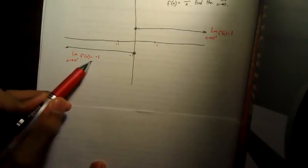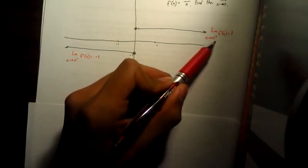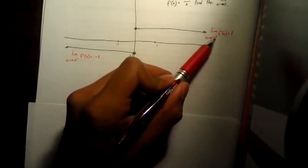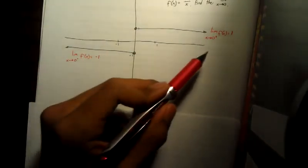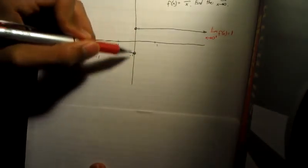When you come from the left, that's also known as the left-hand limit, and that's when you have the little negative sign. As you come from the right, that's indicated by the positive sign.